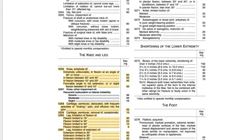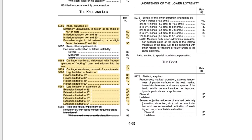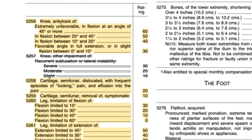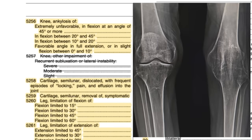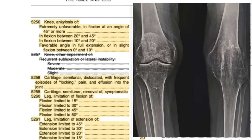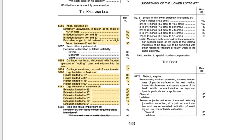I'm not going to talk too much about ankylosis. That word means your joint is fixed — bent permanently. It's kind of rare, because if you're in that situation they'll just replace your knee. So you don't really see those ratings that often.